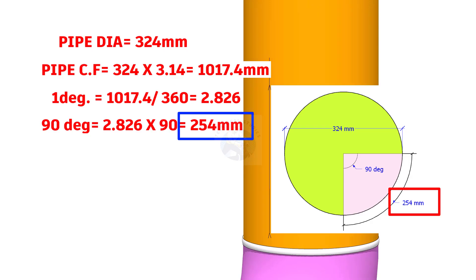This is the arc length for 90 degree in a 324 mm diameter circle.